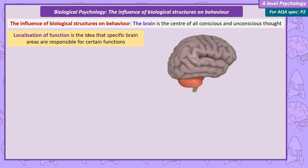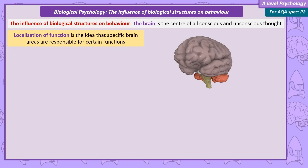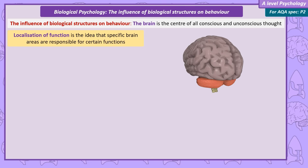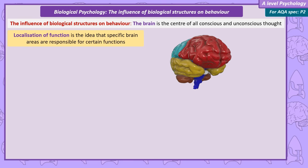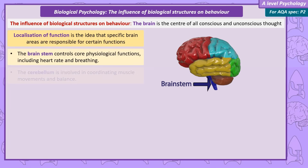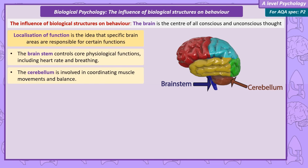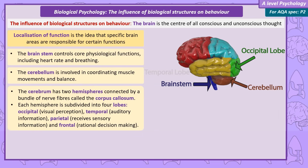Localisation of function is the idea that certain brain areas are responsible for certain functions. The brain stem controls our core abilities like heart rate and breathing. The cerebellum is involved in coordinating muscle movements and balance. The occipital lobe is for visual perception. Areas of the temporal lobe process auditory information. Areas of the parietal lobe receive sensations from across the body. And the frontal lobe is responsible for rational decision making.